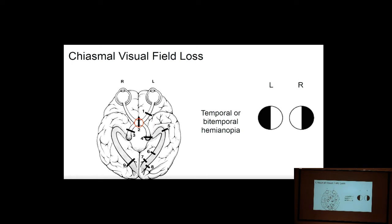Last year we talked about the nasal retina and temporal retina and where those fibers cross. If we have a lesion right in the middle of the chiasm, it affects the crossing nasal retinal fibers. The nasal retina sees the temporal visual field, so the patient will have a bitemporal hemianopia — they can't see the outer parts of vision in either eye. This only happens with a chiasm lesion.